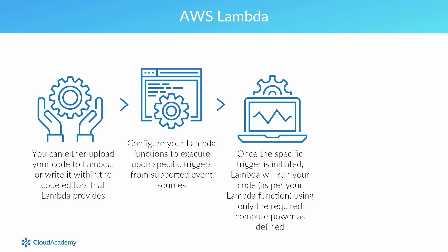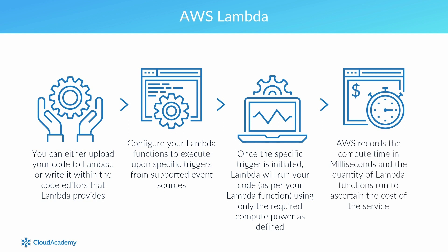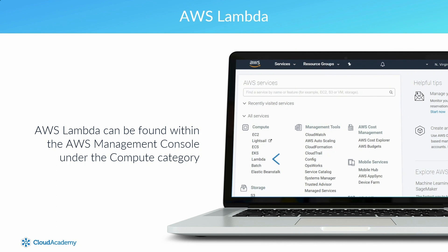Later in this course, I will cover more on when and how this compute power is specified. AWS records the compute time in milliseconds and the quantity of Lambda functions run to ascertain the cost of the service. The Lambda service itself can be found within the AWS Management Console under the compute category, as Lambda is providing a compute function for your code to run on.